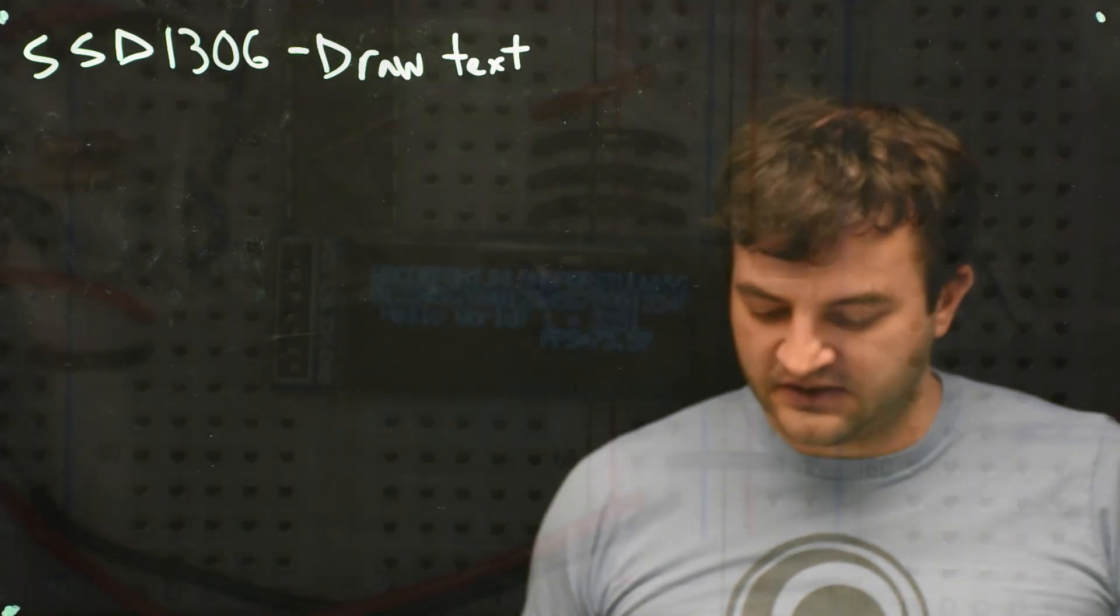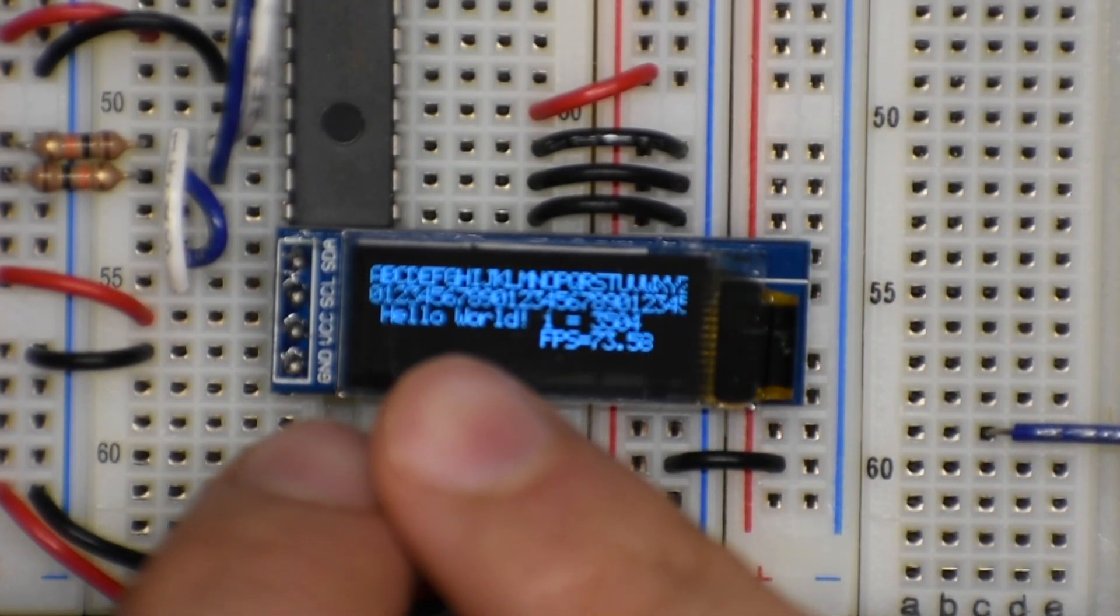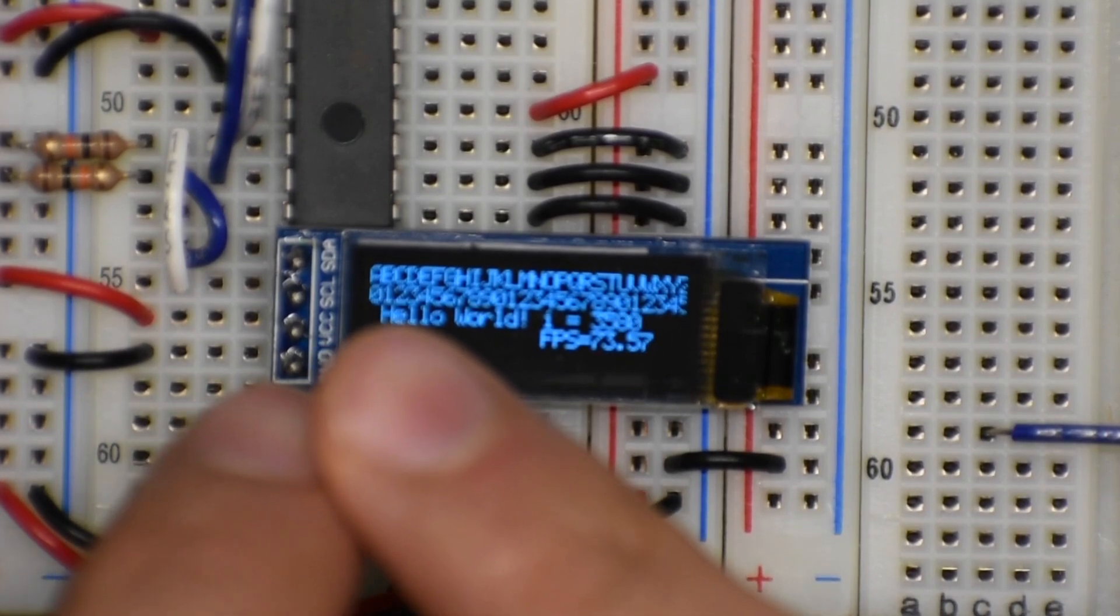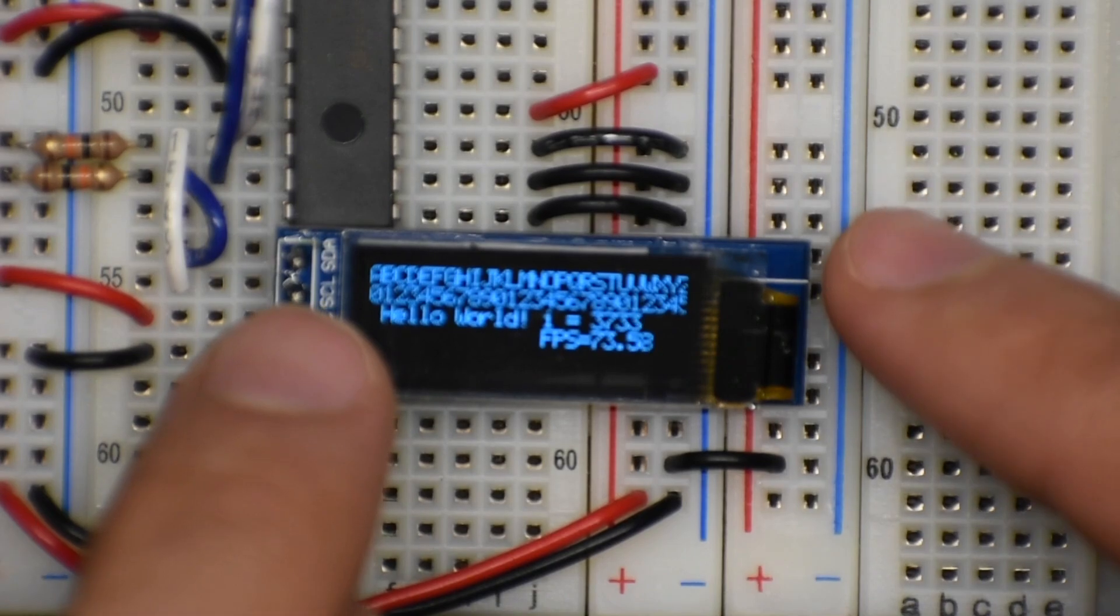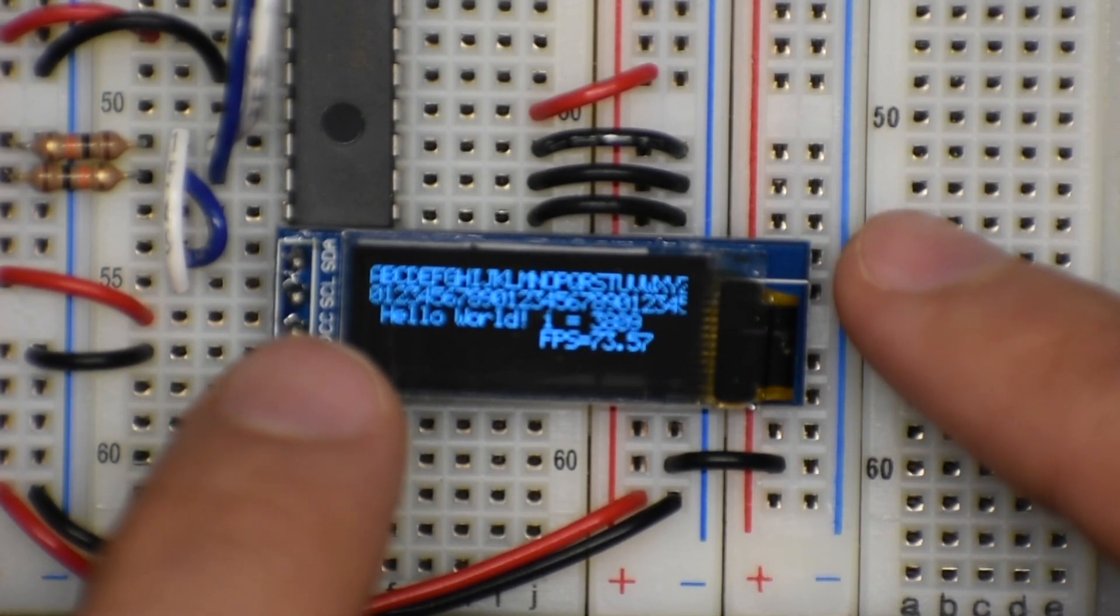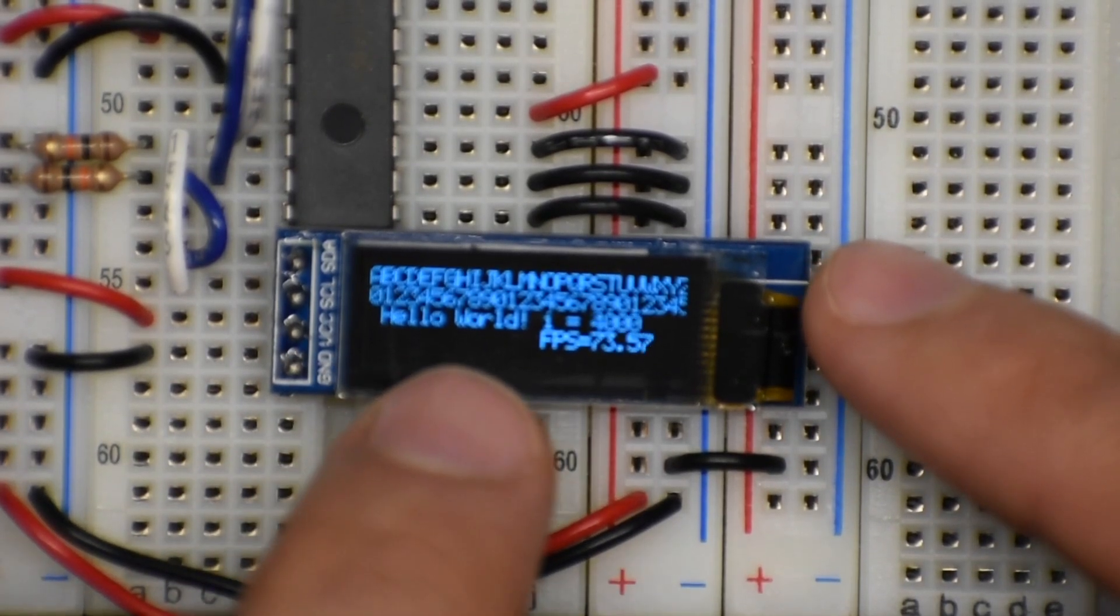So let's take a look at what I've got the screen doing right now. The top row is letters of the alphabet. It's so tiny it's hard to focus on it. The next row is numbers. The next row I've printed hello world because that's our traditional method of saying I have control over the screen.